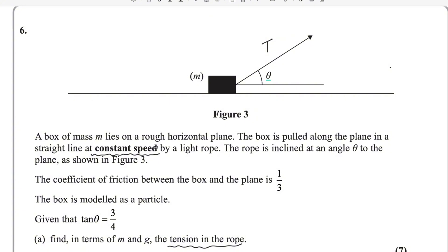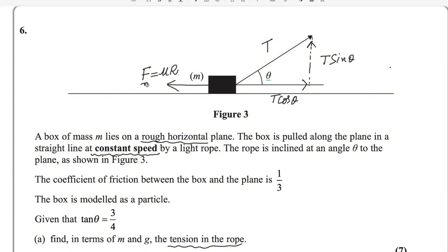We have to resolve the forces into their components. The tension is making angle theta, so by drawing a perpendicular from its head, we get two components: the vertical component T sin theta and the horizontal component T cos theta. Because the box is on a rough horizontal plane, there is a frictional force acting. If the object is moving to the right, friction acts to the left. This friction force equals mu R (F max). There are two more forces: weight mg acting downward and normal reaction R acting upward.